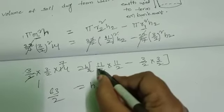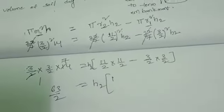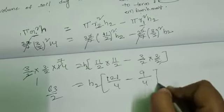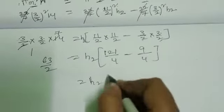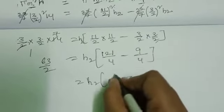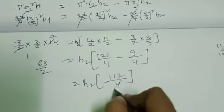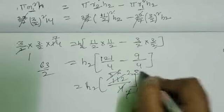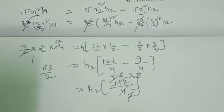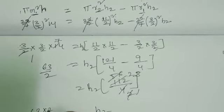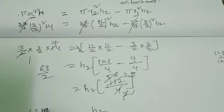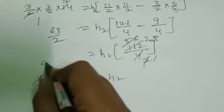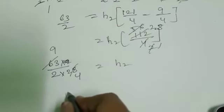Calculating: 11 × 11 = 121, over 4; minus 3 × 3 = 9, over 4. So H2 × (121 − 9) by 4 = H2 × 112 by 4. Therefore H2 equals 63 by 2 multiplied by 4 by 112, which equals 9 by 8.